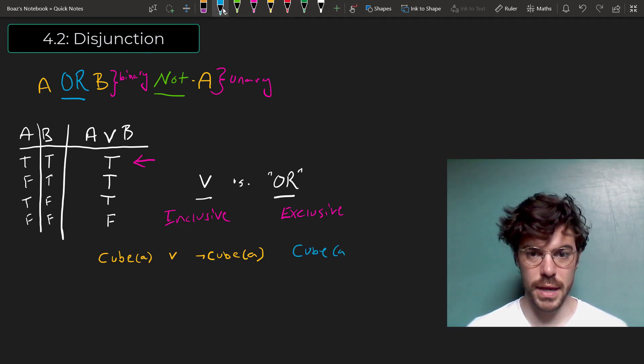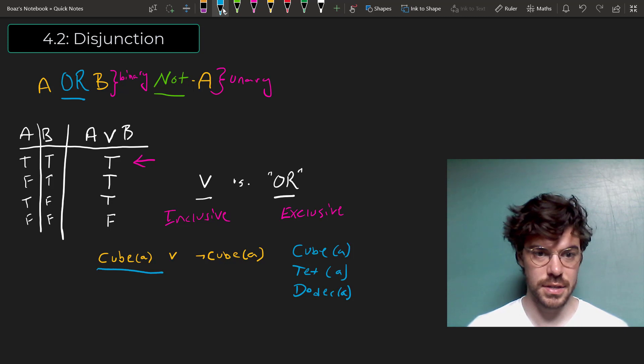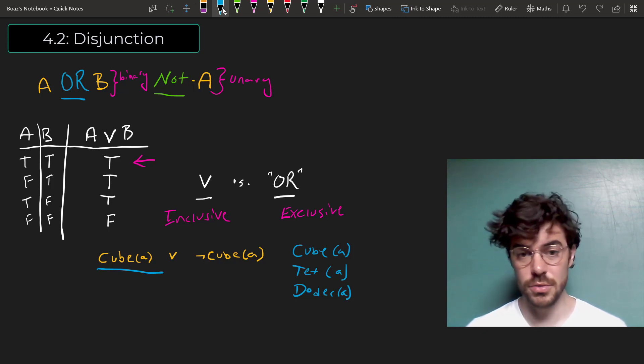A cube, in which case cube A is true. A tetrahedron, in which case tet A is true. Or a dodecahedron, in which case dodeca is true. Well, if cube A is true, then the first disjunct, the left-hand disjunct, is true. But if A is a tetrahedron, then the left-hand disjunct comes out false, but the right-hand disjunct comes out true, since no tetrahedron is a cube. Or if A is a dodecahedron, then likewise the right-hand disjunct comes out true, because no dodecahedron is a cube. So in this case we have a sentence that will always be true in our blocks language.